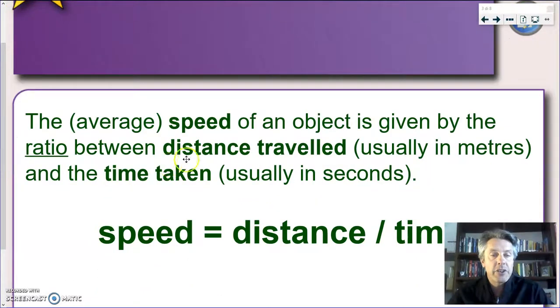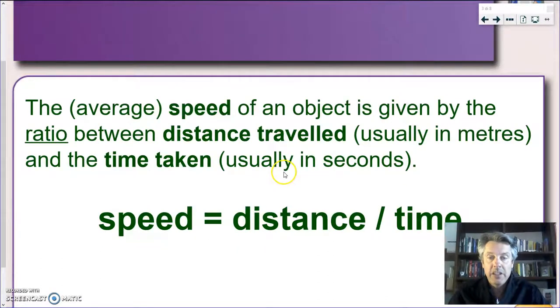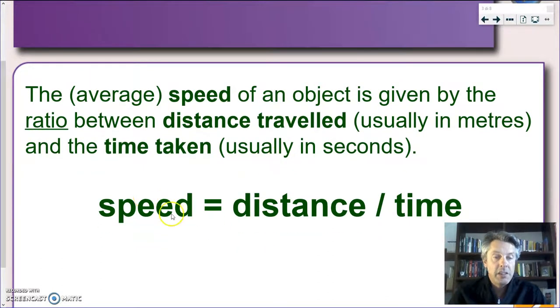So we will say that the average speed of an object is given by the ratio - ratio you know it's a kind of division - between the distance travelled, and since we're using the international system of units most of the time that will be measured in meters, and the time taken. For the same reason it will be usually given in seconds. If we write our word formula this is how it looks like: speed equals distance divided by time. Or as you probably heard it many times, distance over time.